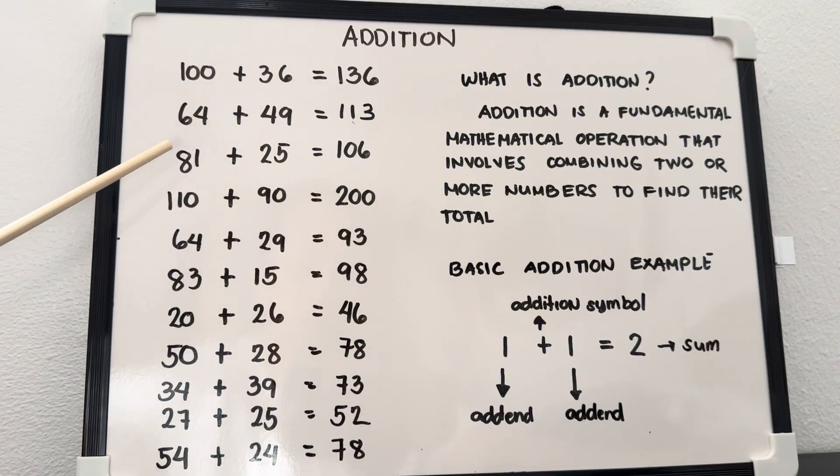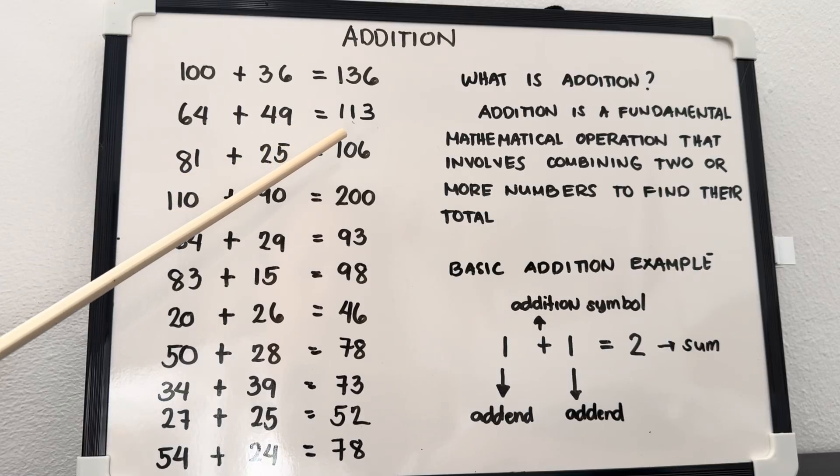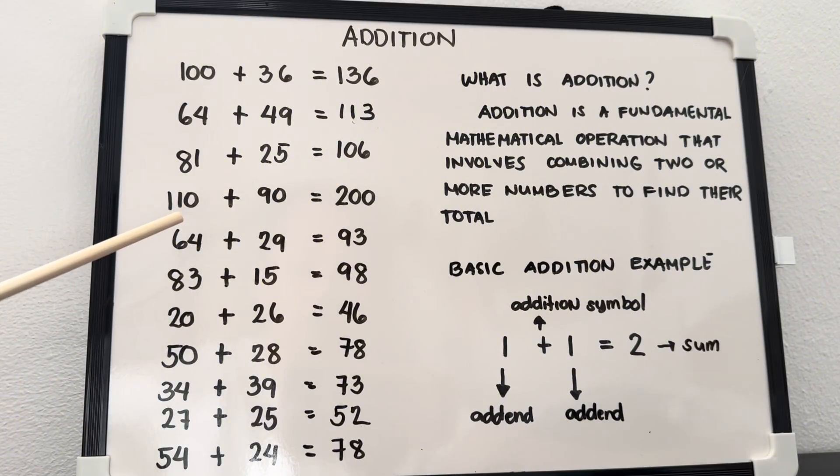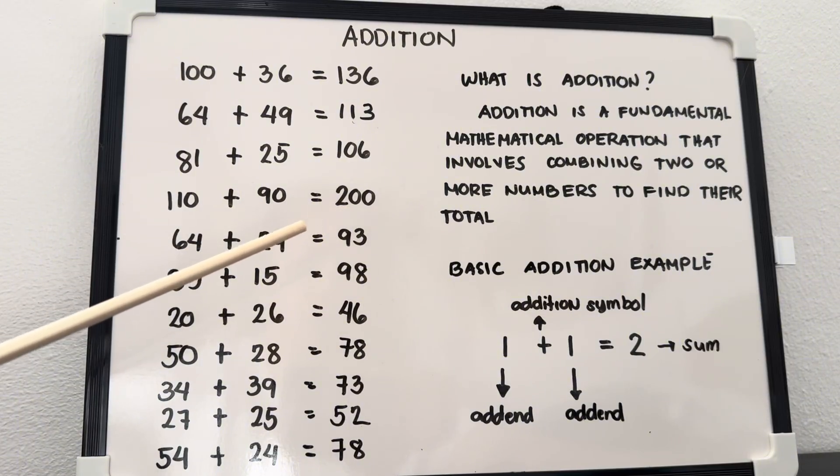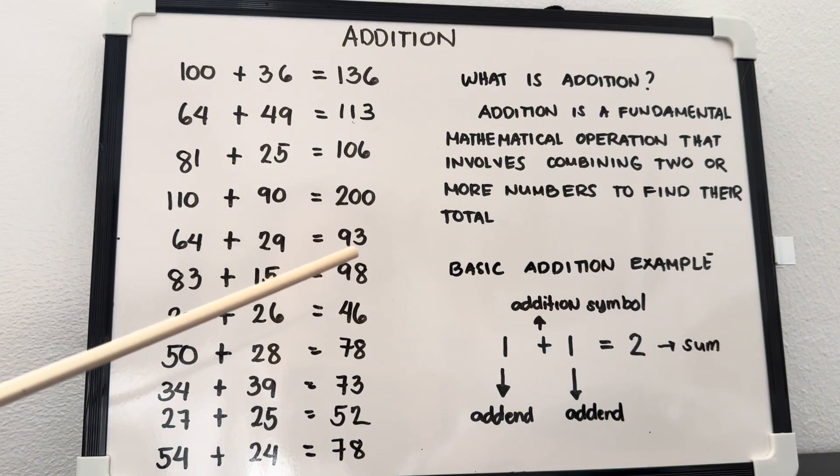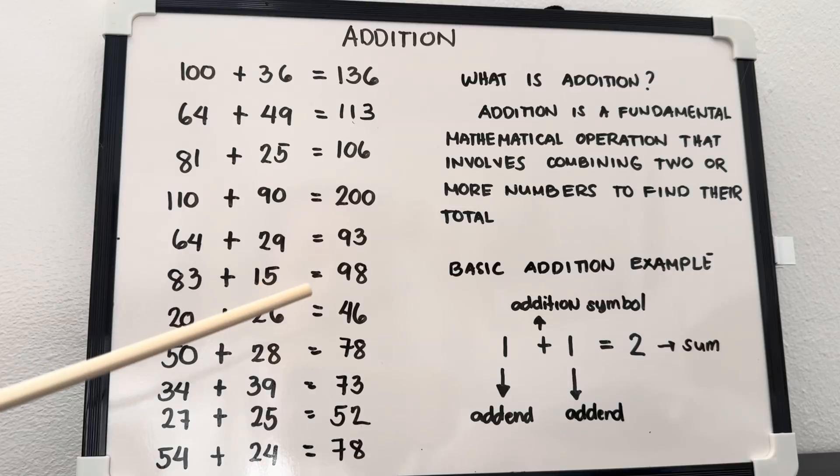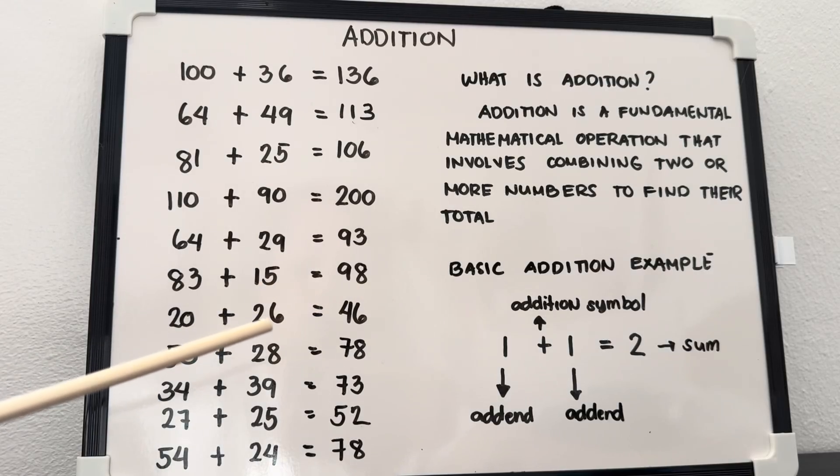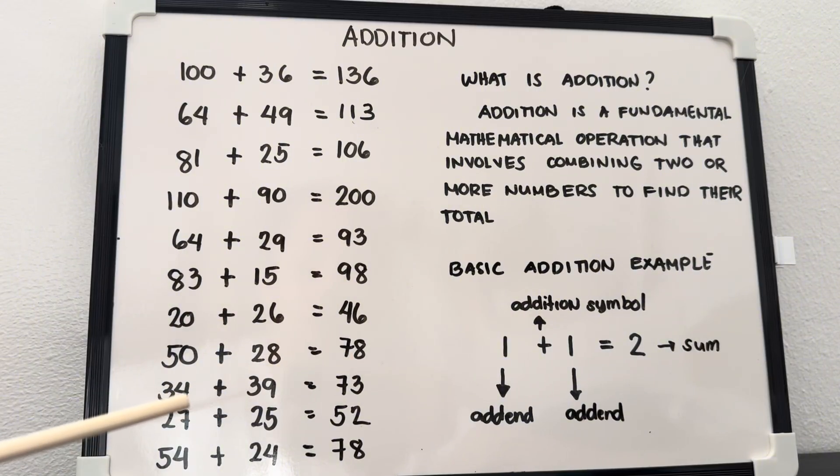Here are some examples: 100 plus 36 equals 136, 64 plus 49 equals 113, 81 plus 25 equals 106, 110 plus 90 equals 200, 64 plus 29 equals 93, 83 plus 15 equals 98, 20 plus 26 equals 46, 50 plus 28 equals 78, 34 plus 39 equals 73, 27 plus 25 equals 52, and lastly 54 plus 24 equals 78.